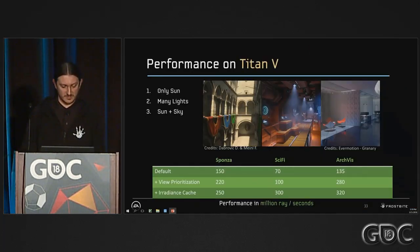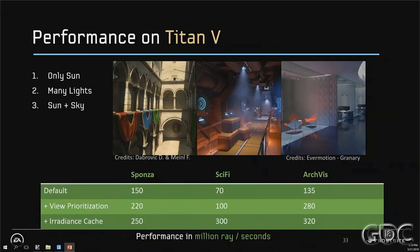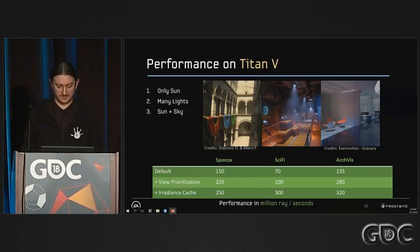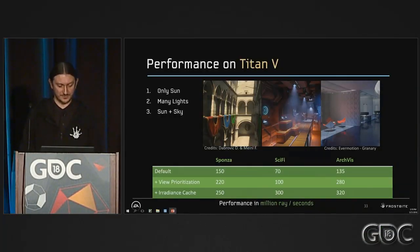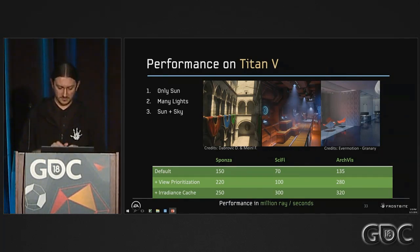For performance, you can see different results for different setups and different amounts of local lights. For example, the sci-fi scene with default settings achieves 70 million rays per second. If you use the irradiance cache, which helps when you have many lights, you can go up to 300 million rays per second.